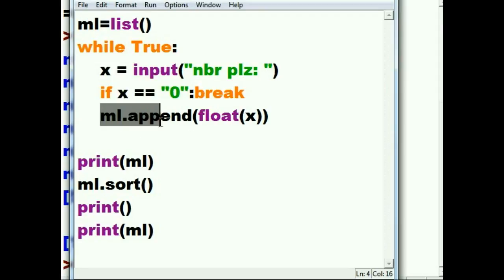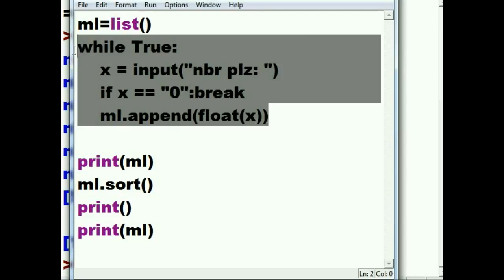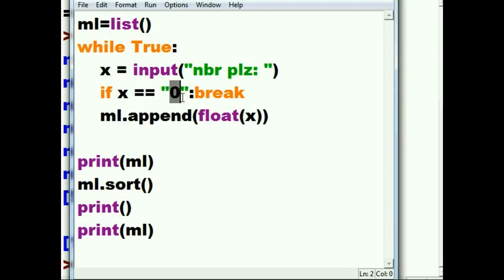Otherwise it will append the value in x that gets converted to a float. It'll append that into the ml list that we defined up here. Then it loops back, of course keeps doing this until we key in zero, then it breaks.